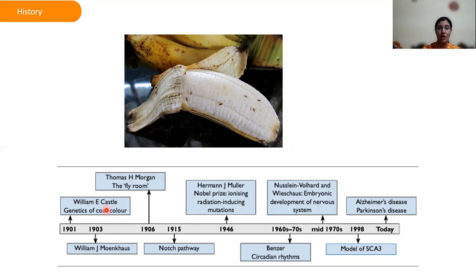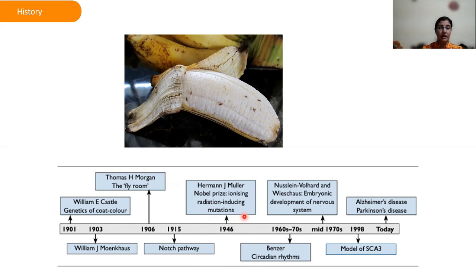Castle's student Lutz studied Drosophila biology and inheritance of wing variation. Later, Thomas Morgan developed a fly room in which he proved the chromosomal theory of inheritance, showing that the white gene resided on the X chromosome. His findings earned him a Nobel Prize. He and his students then went on to define many principles of genetics, including the effect of X-rays on mutation, for which Mueller also won the Nobel Prize.